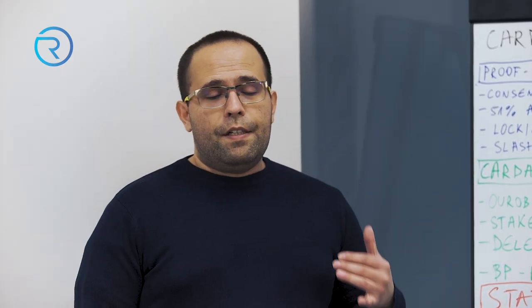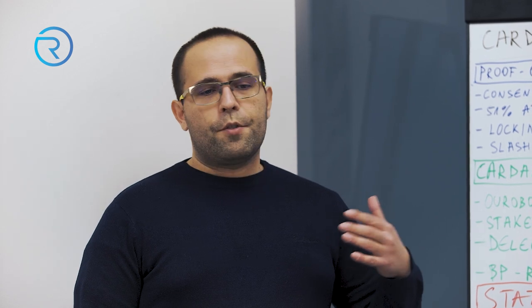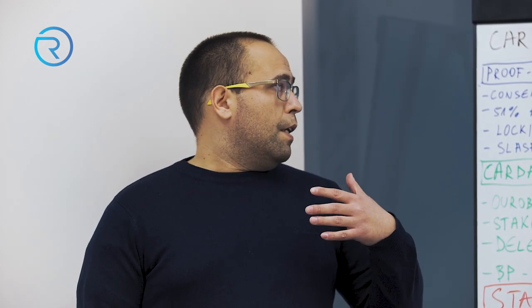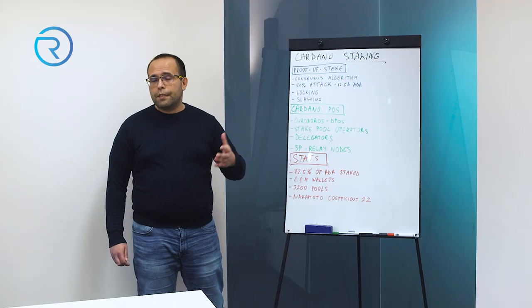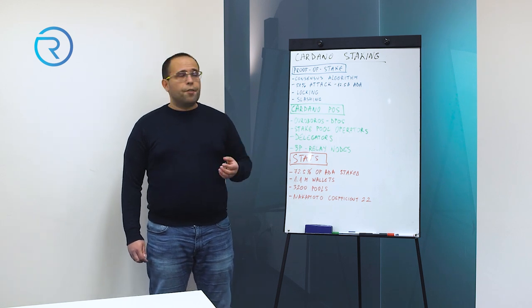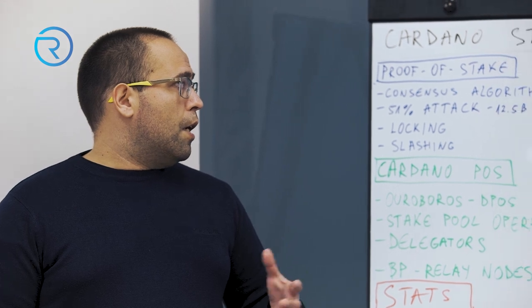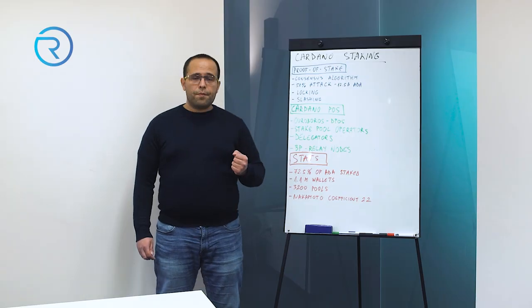So what does staking mean? We have several types of consensus mechanisms in blockchain technology. The first one, probably the most well-known one, is proof of work, which has been implemented in Bitcoin and Ethereum. The newer ones are proof of stake consensus algorithms.